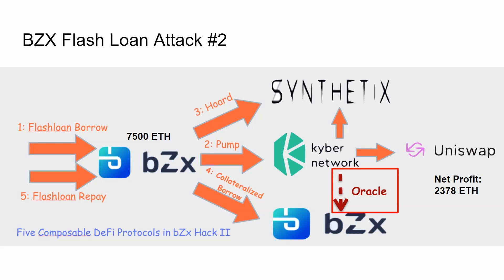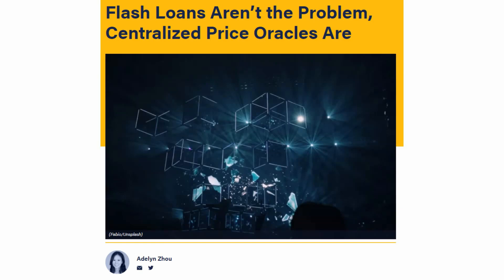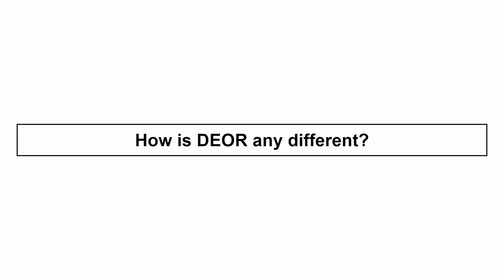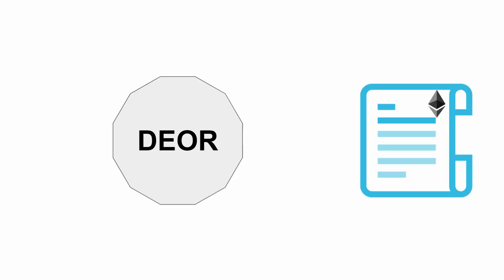These are not only my words — large voices in the DeFi and blockchain space are saying this. An article published by a member of the Chainlink team states that centralized price oracles are a serious liability for DeFi. So the question is, how is Dior any different? To understand how Dior provides an extra layer of security against these attacks, you have to understand how Dior works.